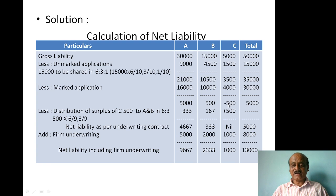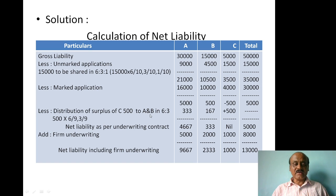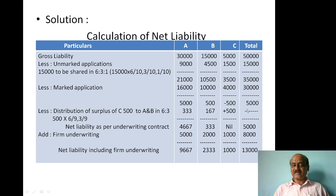Since C has a surplus of 500, those 500 shares are distributed between A and B in the ratio of their underwriting — A : B = 6 : 3, which is 2 : 1. So A gets 500 × 6/9 = 333 shares, and B gets 500 × 3/9 = 167 shares. Adding these: A gets plus 333, B gets plus 167. C's net = minus 500 + 500 = 0.